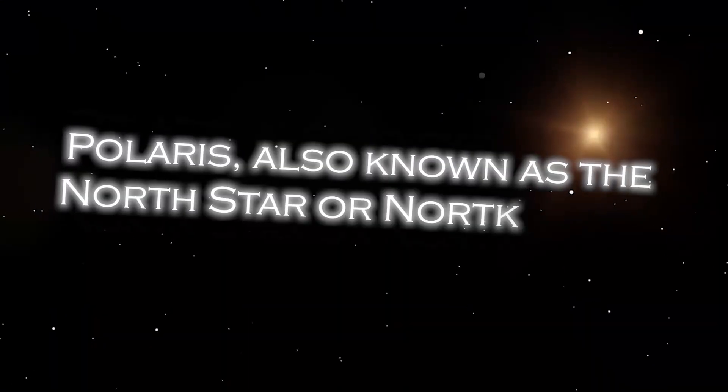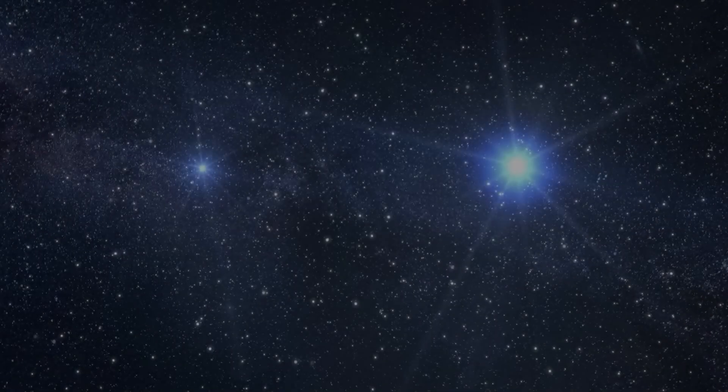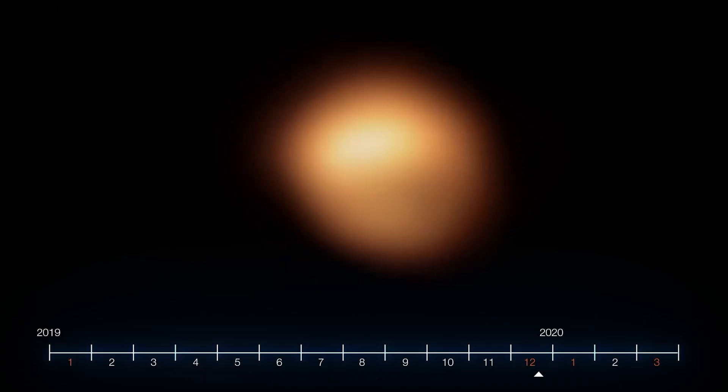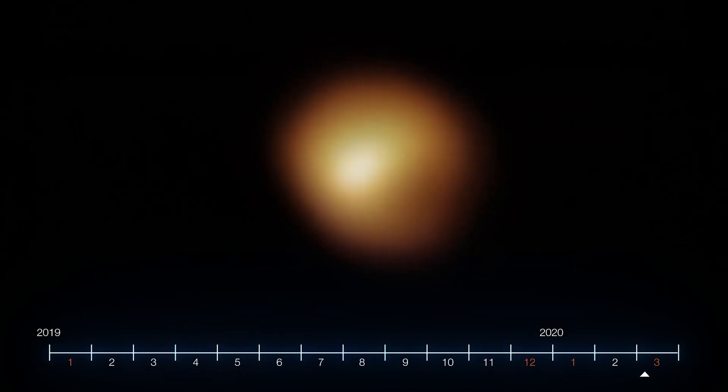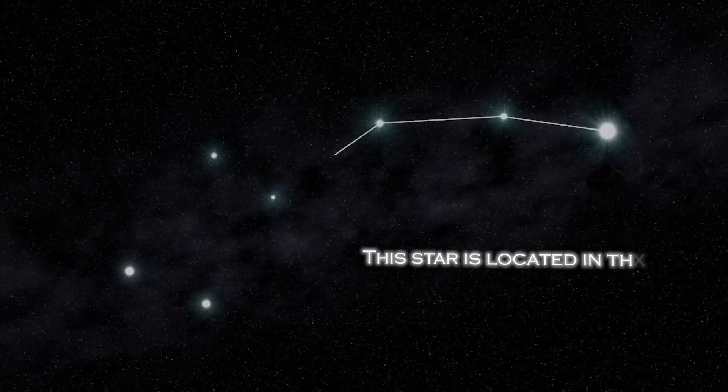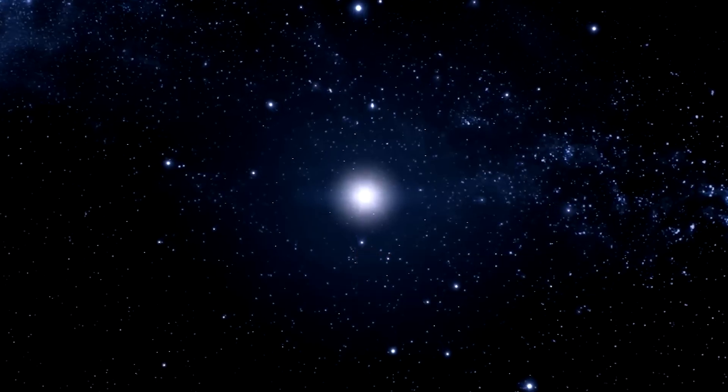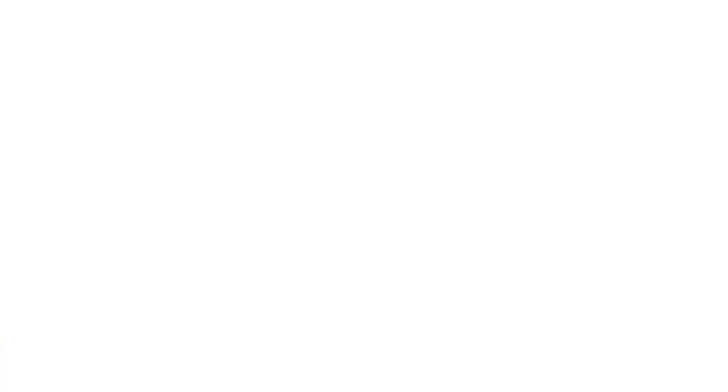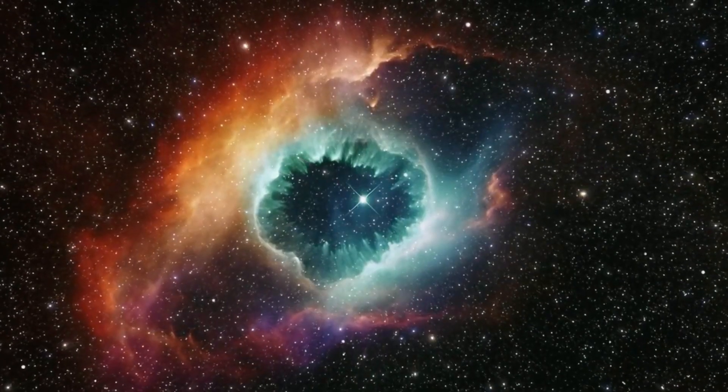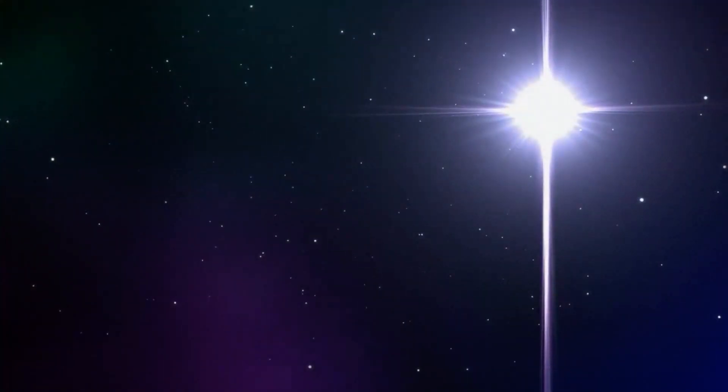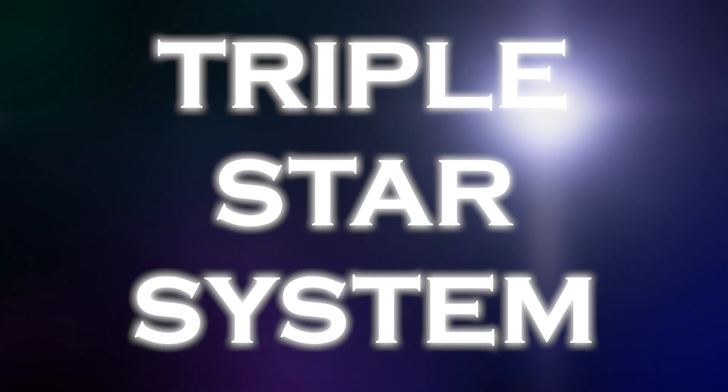Polaris, also known as the North Star, occupies a special position in the sky because of its proximity to the celestial North Pole. It is almost directly over the Earth's North Pole, which gives the illusion that it remains static in the northern sky. The star is located in the constellation Ursa Minor. Polaris is a star of moderate brightness that stands out as a yellow-white supergiant of considerable dimension compared to our Sun. Despite its appearance as a lone star, it is actually part of a rather complex triple star system.